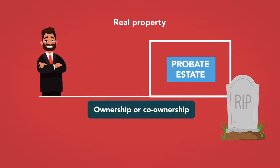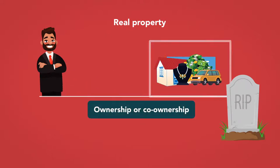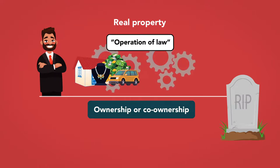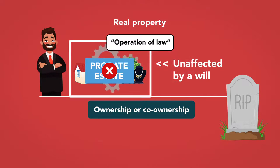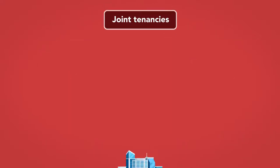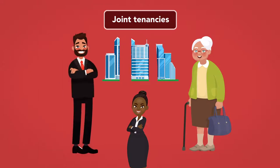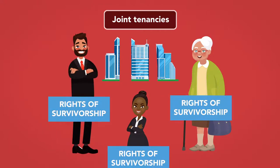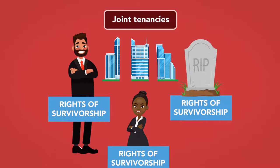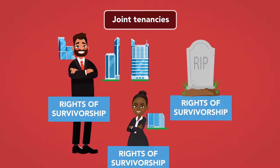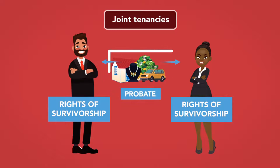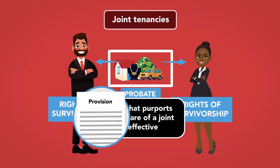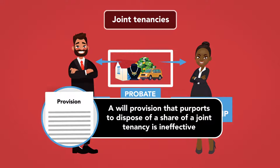However, many other forms of ownership or co-ownership cause property to pass by operation of law to another at death. In these cases, the property does not become part of the probate estate, and so is unaffected by a will. These include joint tenancies. In a joint tenancy, multiple people share property with rights of survivorship. Upon the death of one joint tenant, the remaining tenants automatically inherit the deceased tenant's share. Therefore, an ownership interest in real or personal property as joint tenant with right of survivorship transfers to the survivor outside of probate. A will provision that purports to dispose of a share of a joint tenancy is ineffective.